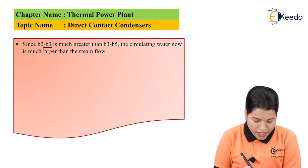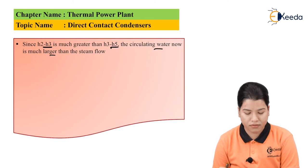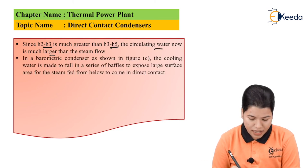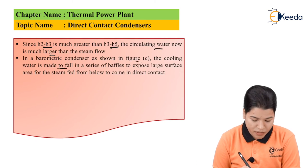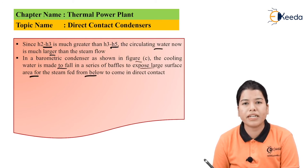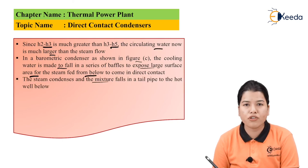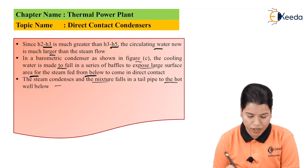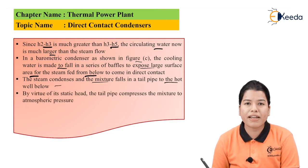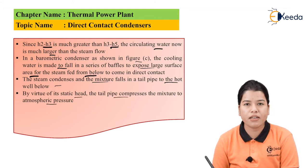Since h2 minus h3 is much greater than h3 minus h5, the circulating water flow is much greater than the steam flow. In the barometric condenser, as shown in figure C, the cooling water is made to fall on a series of baffles to expose a large surface area for the steam, which is fed from below to come into direct contact. The steam condenses and the mixture falls down the tail pipe. By virtue of this static head, the tail pipe compresses the mixture to atmospheric pressure.